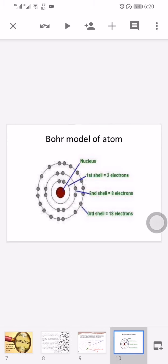The first orbit is represented as K shell and it can hold up to 2 electrons. The second orbit is represented as L shell and it can hold up to 8 electrons. The third orbit is represented as M shell and it can contain up to 18 electrons. The fourth orbit is represented as N shell and it can contain a maximum of 32 electrons.